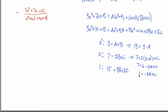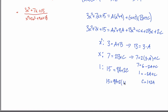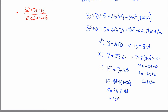Now I have two equations in a and c. Solving for c: c equals one plus two a. Substituting into the third equation: fifteen equals nine a plus two times one plus two a, which gives fifteen equals nine a plus two plus four a, so fifteen equals thirteen a plus two, meaning thirteen equals thirteen a, so a equals one.